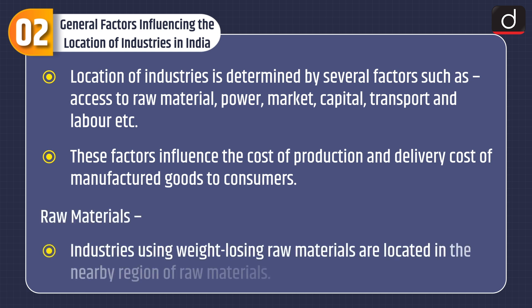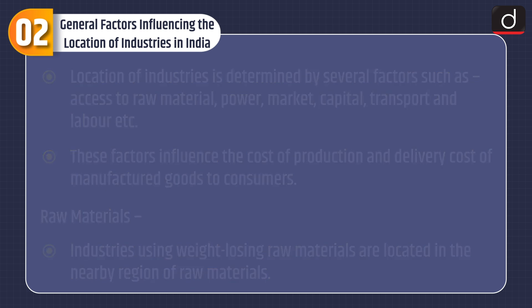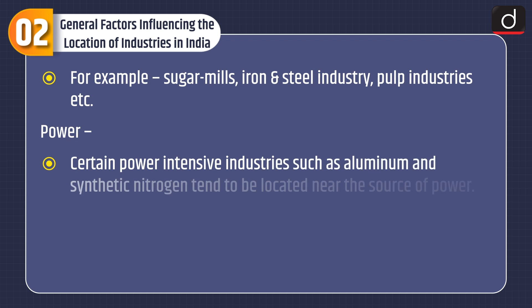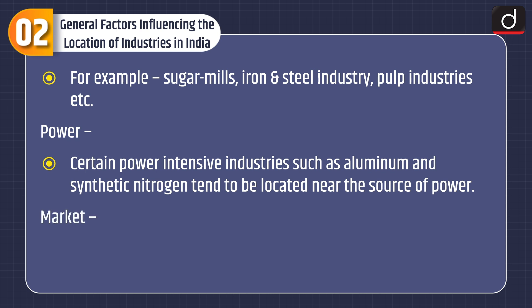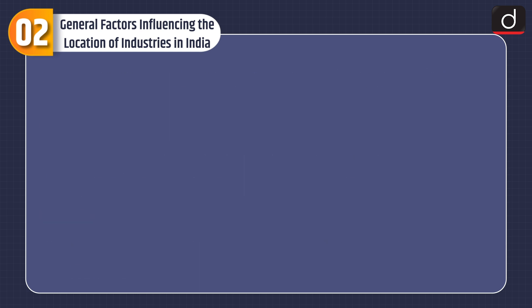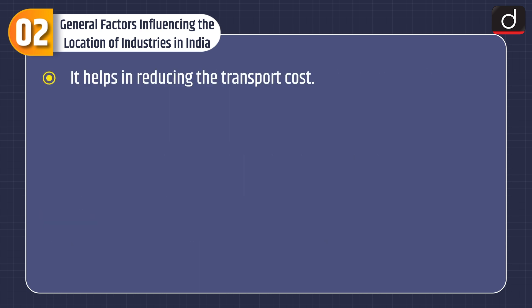Raw materials: Industries using weight-losing raw materials are located in the nearby region of raw materials — for example, sugar mills, iron and steel industry, pulp industries, etc. Power: Certain power-intensive industries such as aluminum and synthetic nitrogen tend to be located near the source of power. Market: Nearness to market is essential for quick delivery of manufactured goods and it helps in reducing the transport cost.